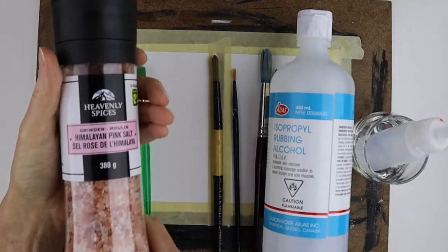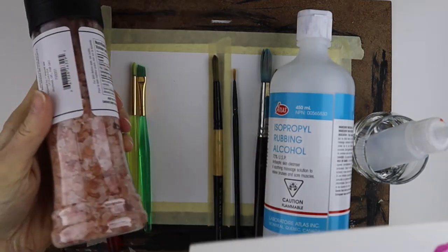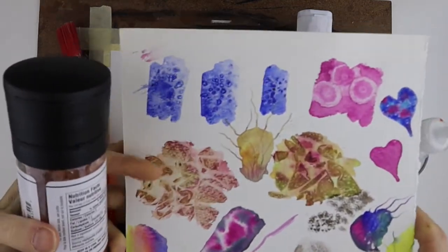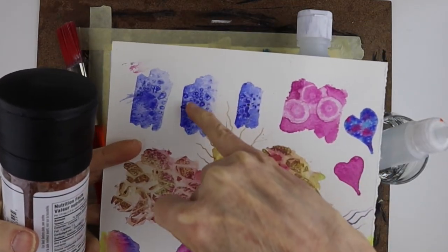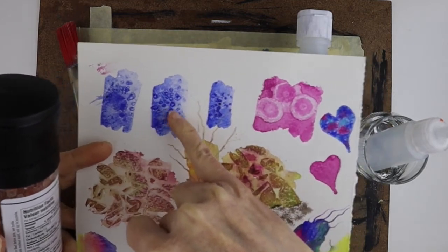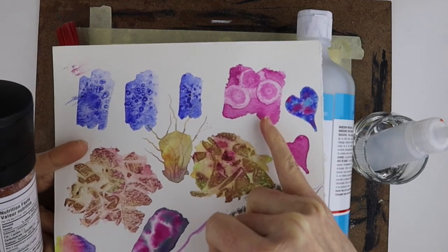The other thing you can use is coarse salt. This is what I got at the dollar store. What the coarse salt does is when you add it to your paint when it's still wet, it's going to make some really interesting textures. So this is from the coarse salt and this is the texture you're going to get with the alcohol.